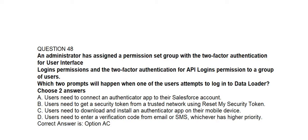Question number forty-eight. An administrator has assigned a permission set group with the two-factor authentication for user interface logins permission and the two-factor authentication for API logins permission to a group of users. Which two prompts will happen when one of the users attempts to log in to Data Loader? Option A: Users need to connect an authenticator app to the Salesforce account. Option B: Users need to get a security token from a trusted network using Reset My Security Token. Option C: Users need to download and install an authenticator app on their mobile device. Option D: Users need to enter a verification code from email or SMS. Correct answer is Option A and Option C.